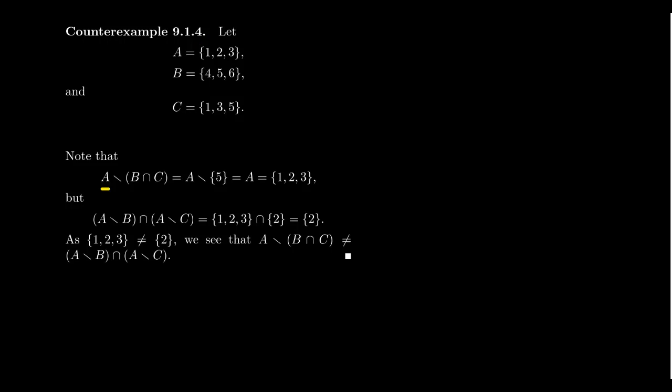So note, if I take A minus B intersect C, well, B intersect C is going to be just 5. That's the only thing that lives in both of them. And if you take 5 away from A, you took away nothing. You get back A. So A minus B intersect C is just the set 1, 2, 3. On the other hand, if you take A minus B intersect A minus C, well, A minus B is going to just be 1, 2, 3, because there's nothing in B to take out of A. On the other hand, A minus C does have something. C contains 1 and 3, which you take away and you're left with just a 2 right here. 1, 2, 3 intersect 2 gives you back 2. And so notice here that the set 1, 2, 3 is not the same thing as the set 2. They disagree. And therefore these two sets disagree as well. We then have found a counterexample, which shows that these two sets are not equal to each other in general.